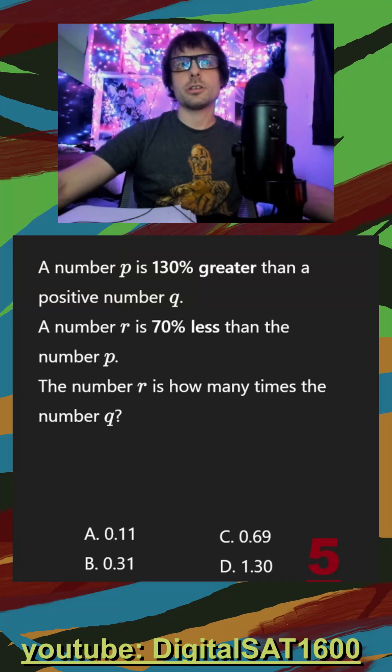A number P is 130% greater than a positive number Q. So this is already kind of like a transcribing problem where we want to turn our context into equations. So I'm going to say P is equal to, this phrase can be tricky. So 130% we want to write as a decimal, so it would be 1.3.